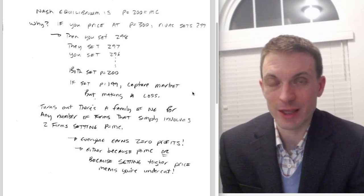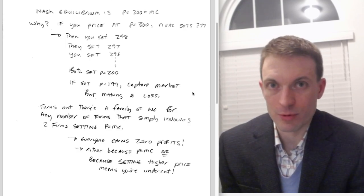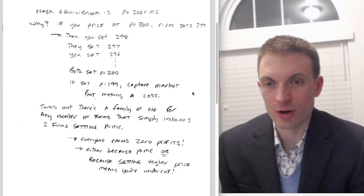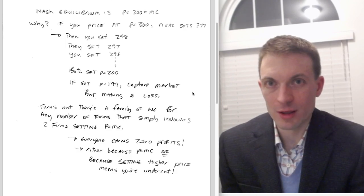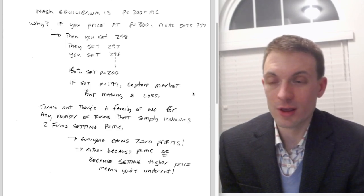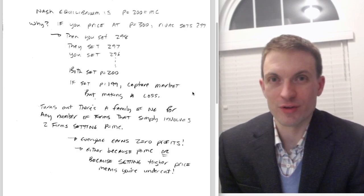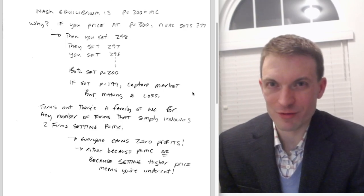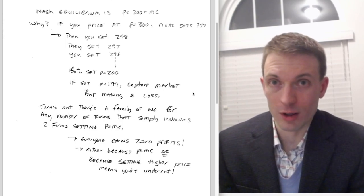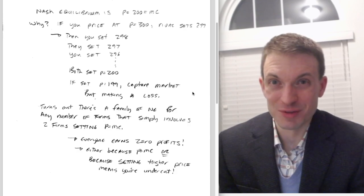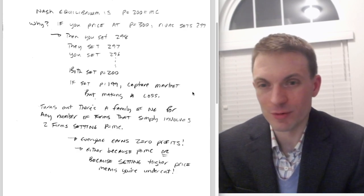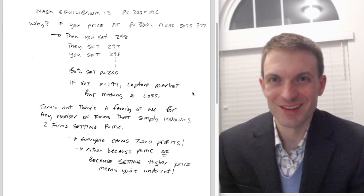Now it actually turns out there's an entire family of Nash equilibria in the identical products Bertrand where you have at least two firms setting price equal to marginal cost. There's gonna be a whole family of Nash equilibria of that variety. It doesn't matter how many firms we have in the market—if two firms are setting price equal to marginal cost, nobody can gain by doing anything else. It actually doesn't matter what any of the other firms do as long as you have two setting price equal to marginal cost.